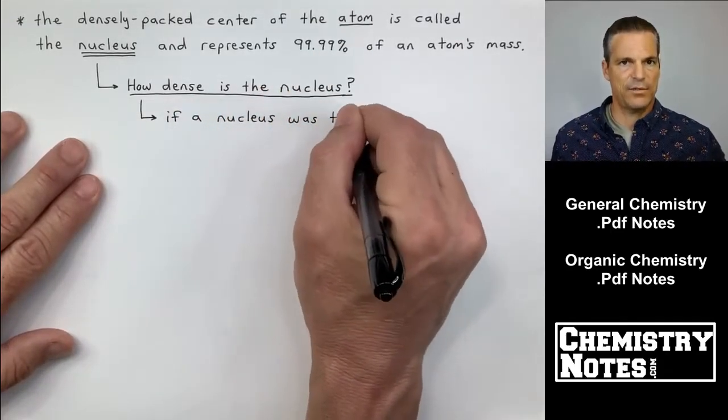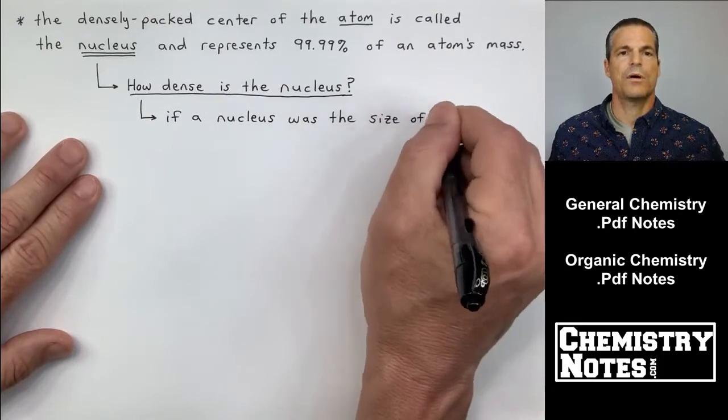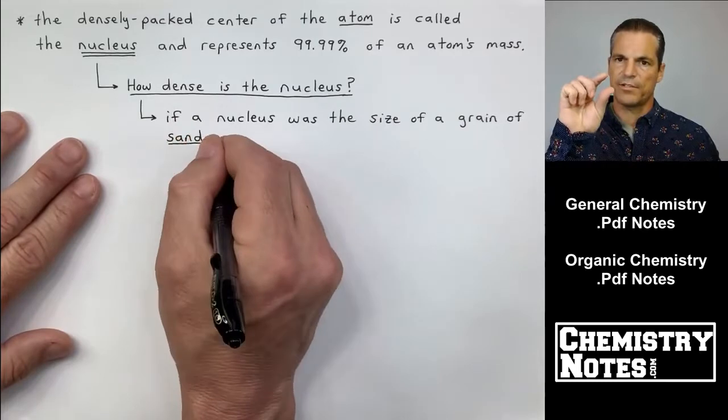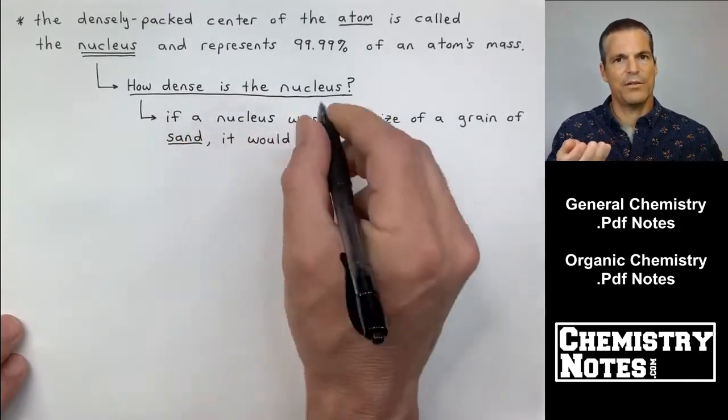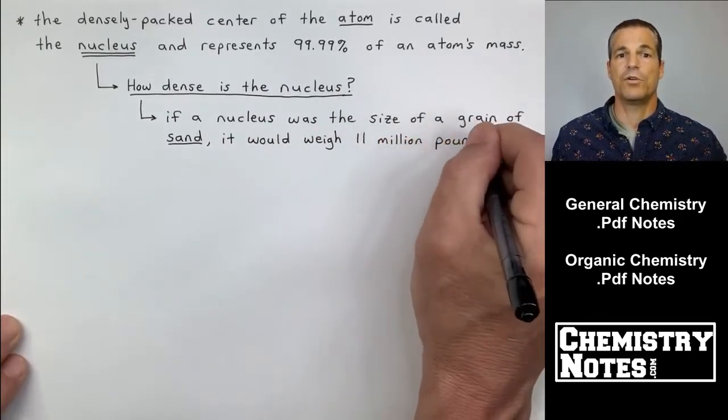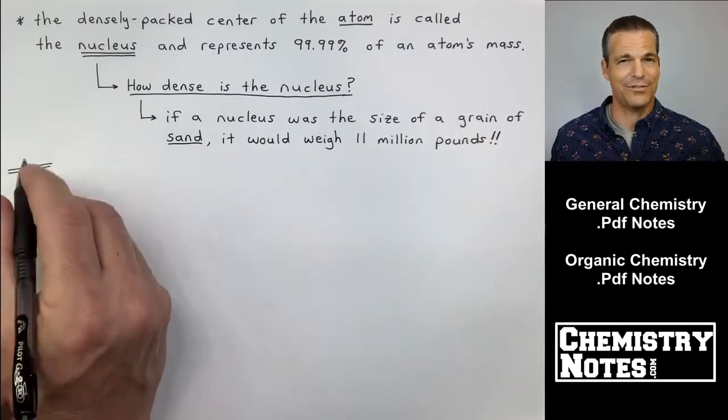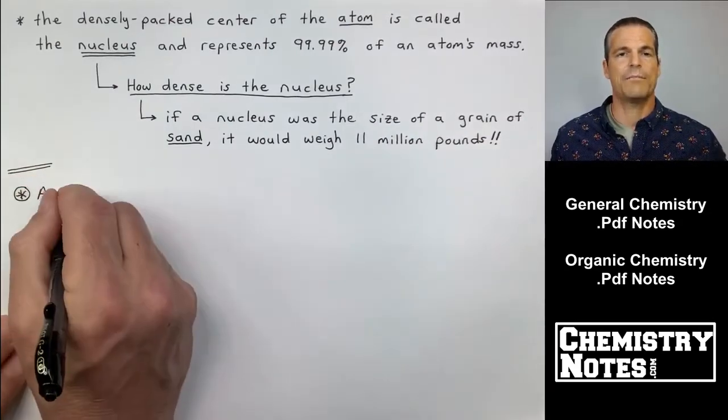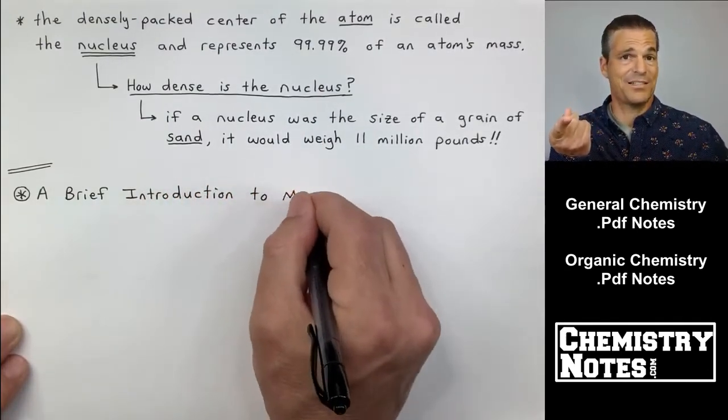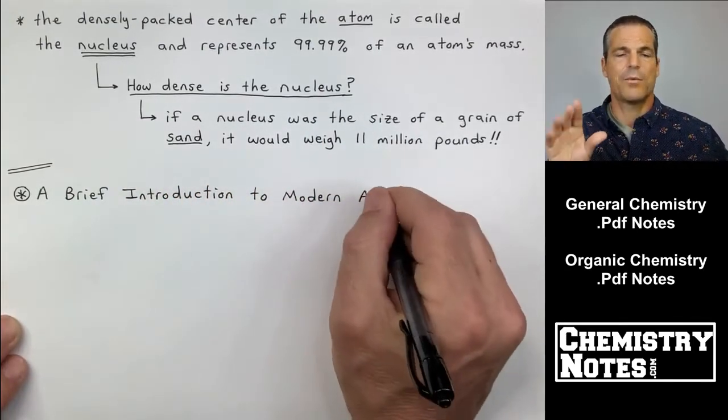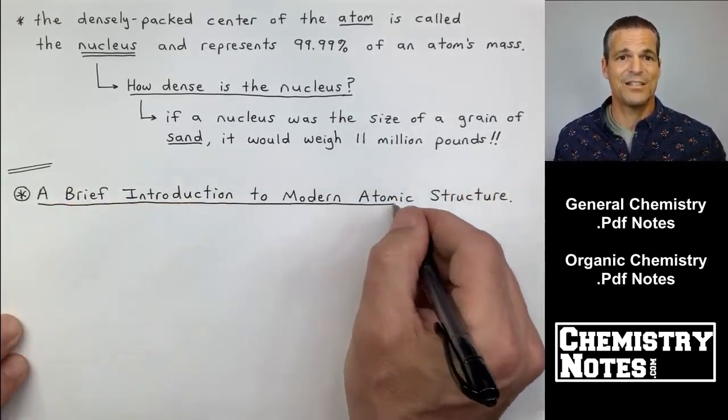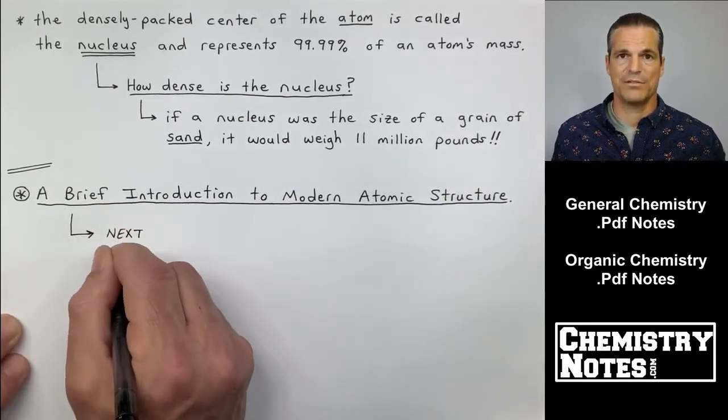How dense is the nucleus? When I think of something that's dense, I think of like a lead weight. A lead weight can be pretty small and still really heavy. But that has nothing on the nucleus. For example, if a nucleus was the size of a grain of sand, a little grain of sand, it would weigh 11 million pounds. Imagine a little tiny grain of sand that was lead, it would still weigh essentially nothing to you. You and I are unable to comprehend just how dense a grain of sand being 11 million pounds is.